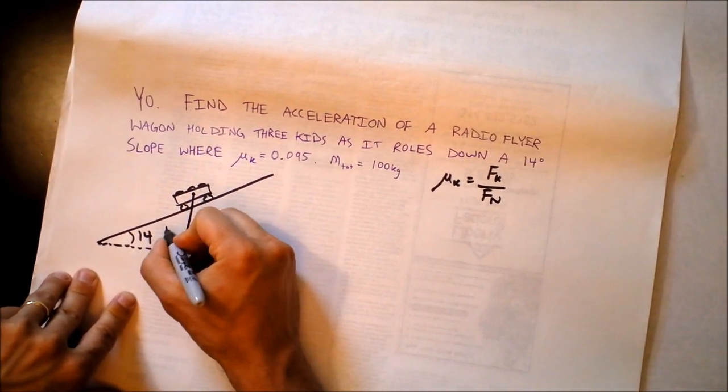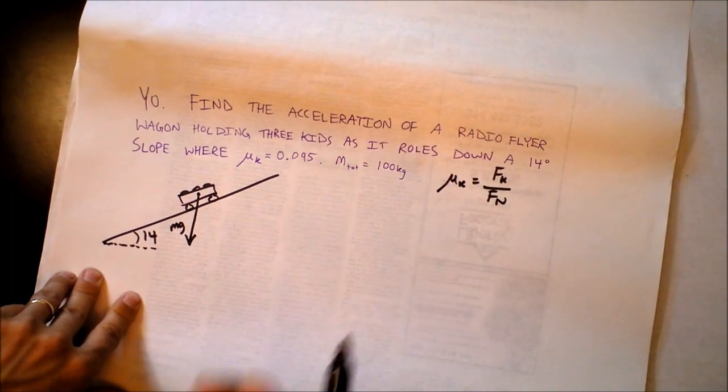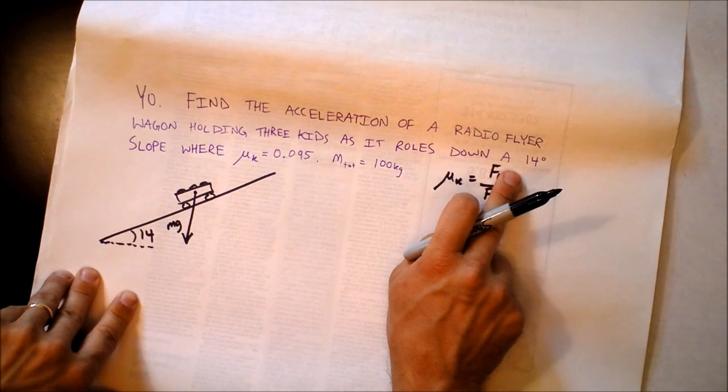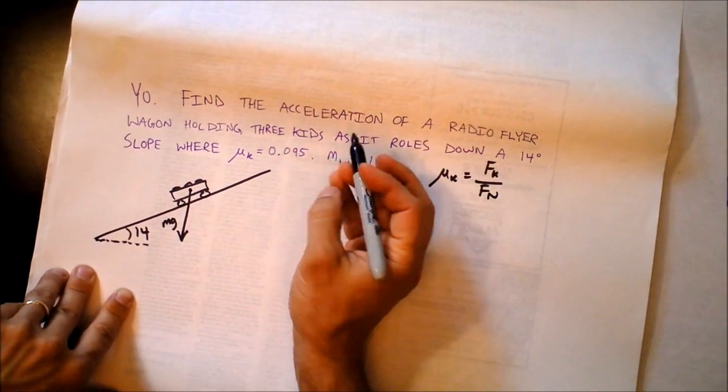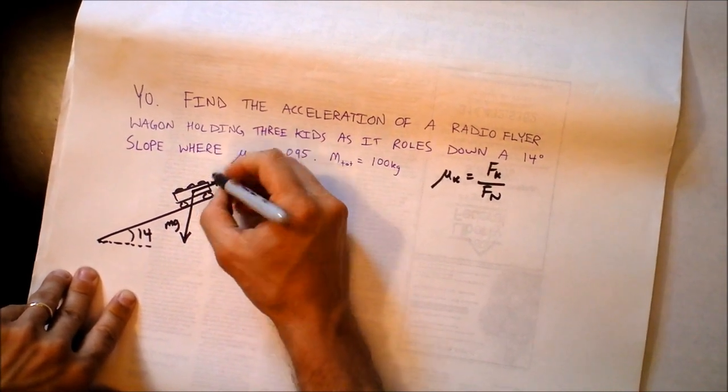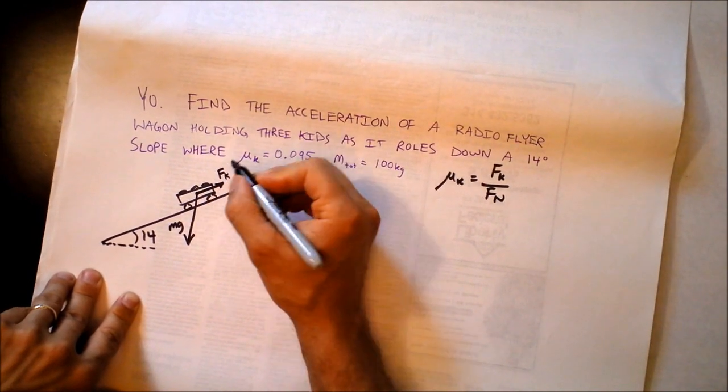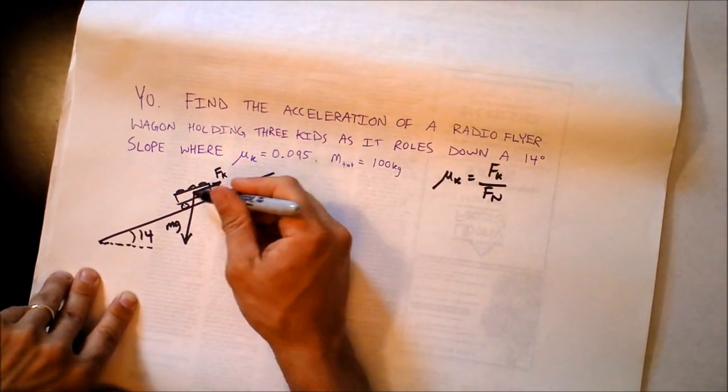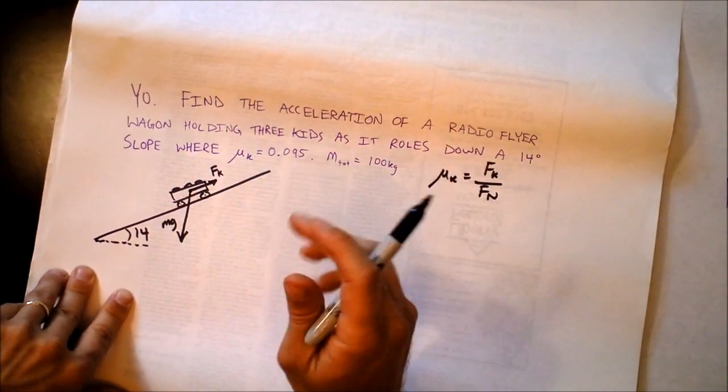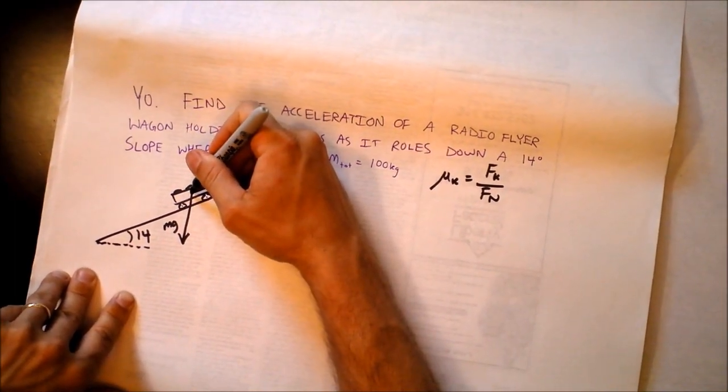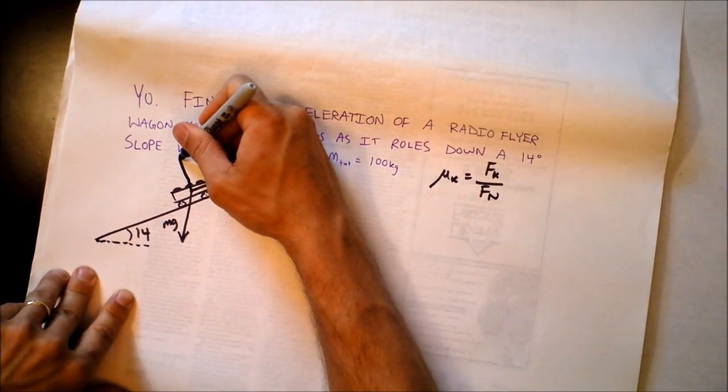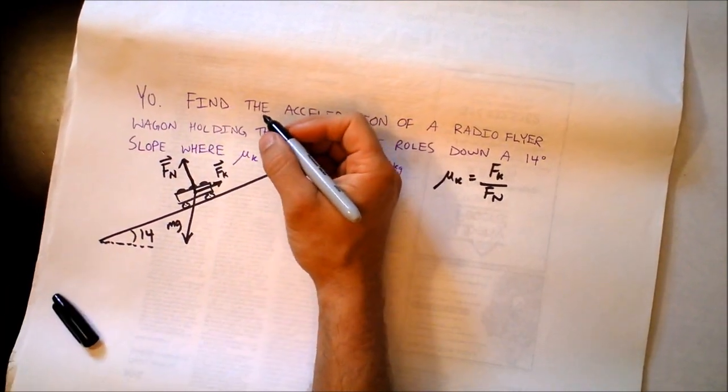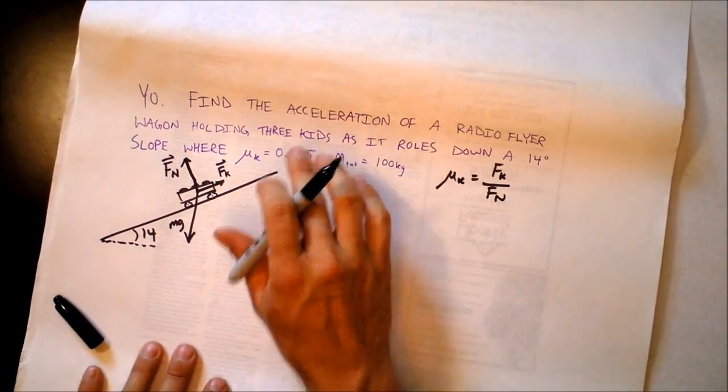Dot in the center. And now we need to draw the forces. First, we always draw the weight first. So we got mg right there. Next step is to think about what other forces might be acting on this wagon. Friction will act in which direction? Very good. Friction goes that direction directly up the slope because the wagon is moving down the slope. And it's kinetic friction because it's in motion. And then there is another force. And that's called the normal force.